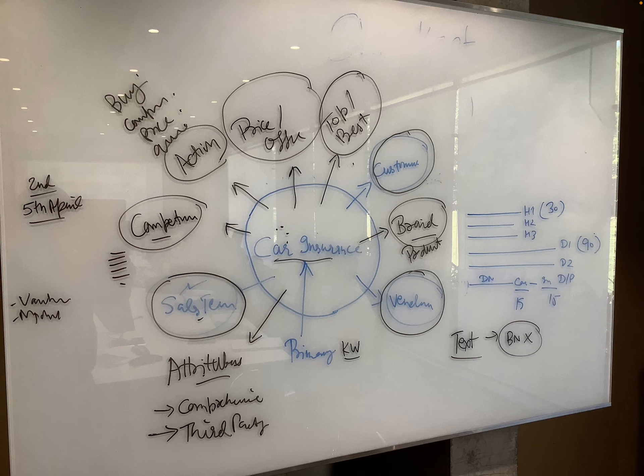You can always use keyword combinations like 'top' or 'best' as a prefix to your primary phrase. You can also look at keywords related to price and offers — for example, 'cheapest car insurance,' 'economical car insurance,' 'affordable car insurance,' 'car insurance starting at 50% off,' or 'car insurance as low as 2000 rupees.' Then there are action keywords like 'buy car insurance,' 'sell car insurance,' 'price of car insurance,' 'quotation of car insurance,' or 'comparison of car insurance prices.'